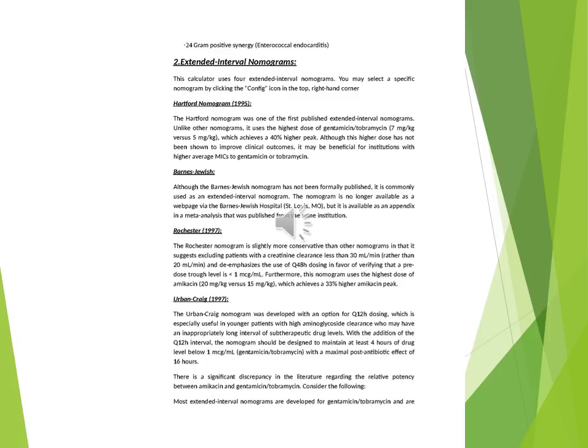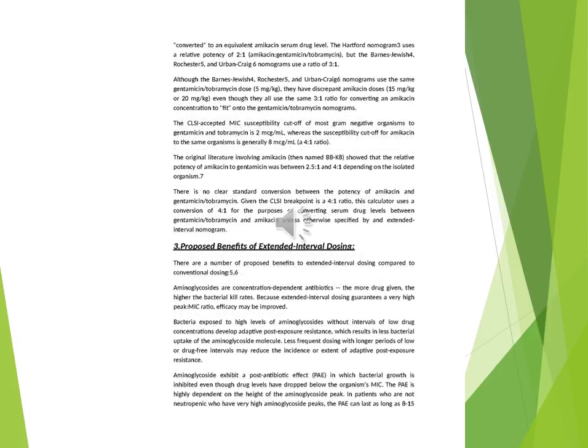Relative potency of amikacin versus gentamicin/tobramycin: there is a significant discrepancy in the literature regarding relative potency. Most extended interval nomograms are developed for gentamicin/tobramycin and are converted to an equivalent amikacin serum drug level. The Harford nomogram uses a relative potency of 2:1 (amikacin:gentamicin/tobramycin), but the Barnes Jewish, Rochester, and Urban Craig nomograms use a ratio of 3:1. Despite using the same 3:1 ratio, these nomograms have discrepant amikacin doses of 15 mg/kg or 20 mg/kg.